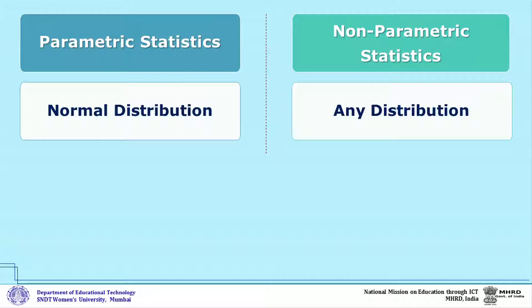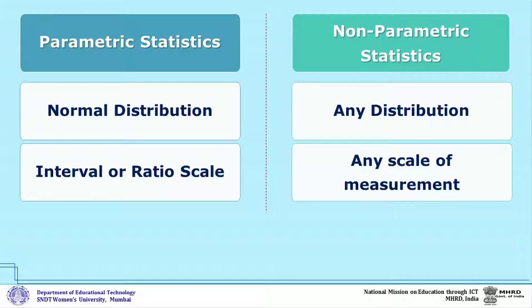Distributions can be of different types like exponential distribution, u distribution, regular distribution, chi-square distribution, and normal distribution. So for non-parametric statistics, the distribution can be any. The second difference is that in parametric statistics, your data should be either on the interval scale or ratio scale.